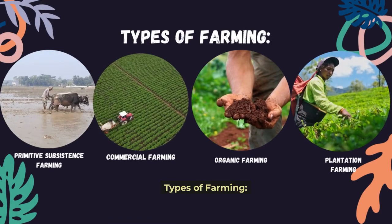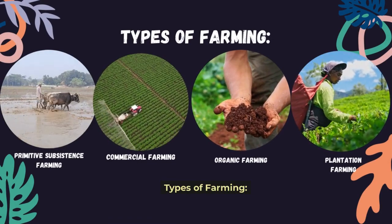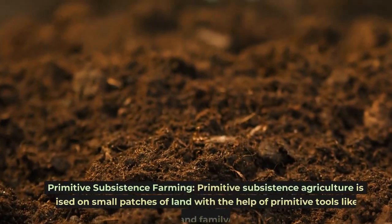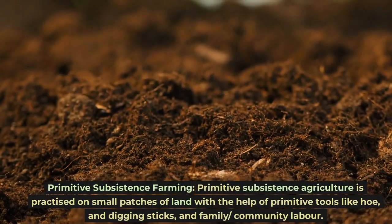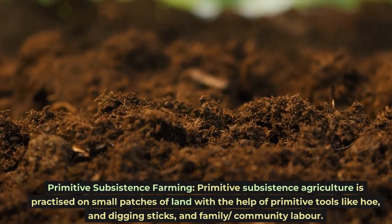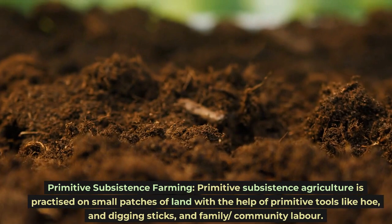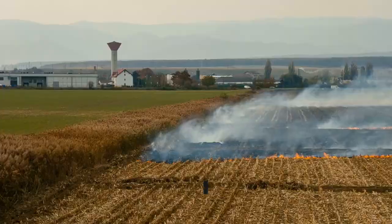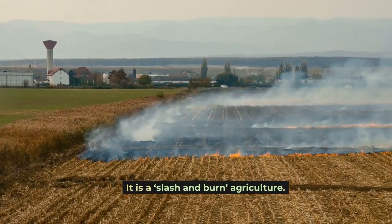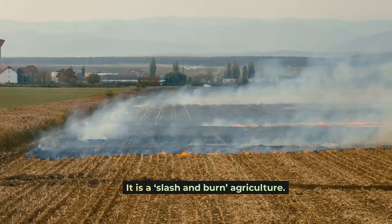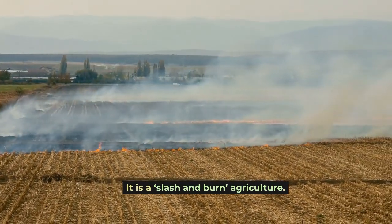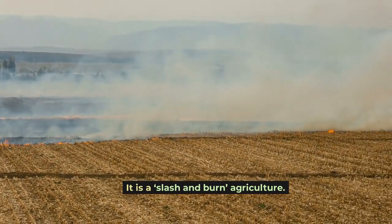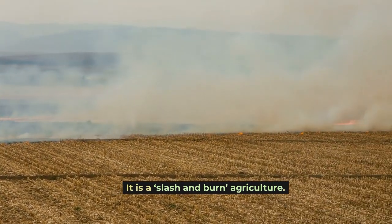Now let's discuss the types of farming: primitive subsistence farming, commercial farming, organic farming, and plantation farming. Primitive subsistence agriculture is practiced on small patches of land with the help of primitive tools like hoe and digging sticks, and family or community labor. In the footage, you can see the slash and burn technique, which is part of primitive subsistence farming — farmers cut down trees of the forest, burn the plant remains, and use the land for farming.